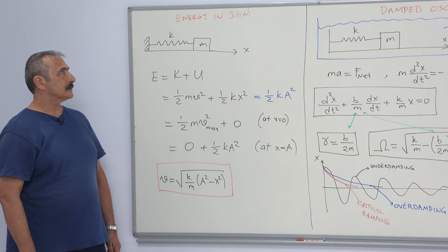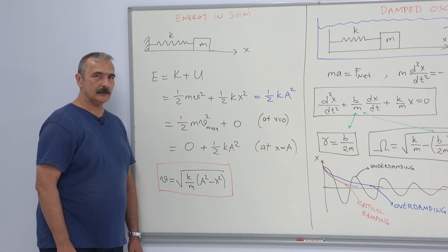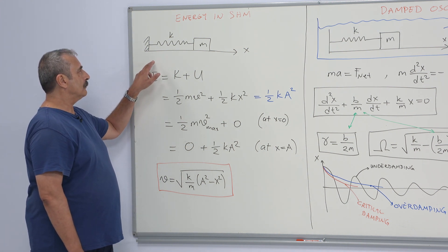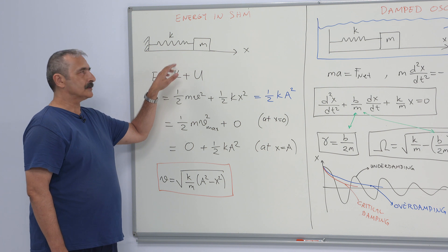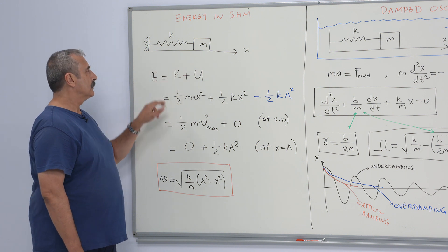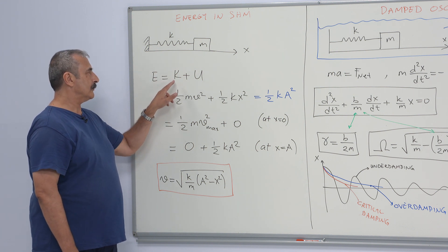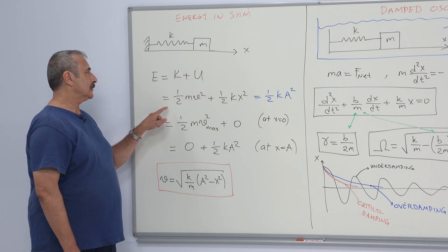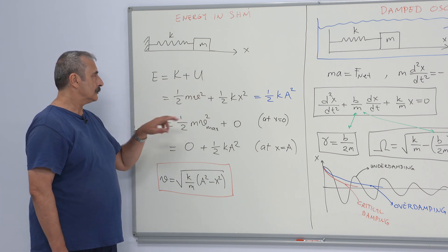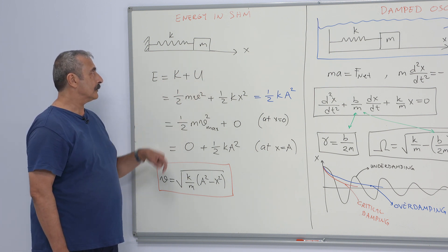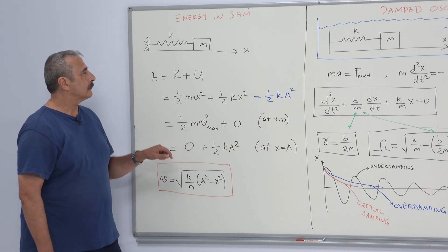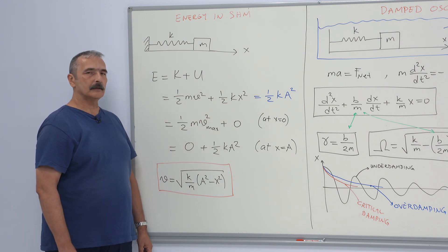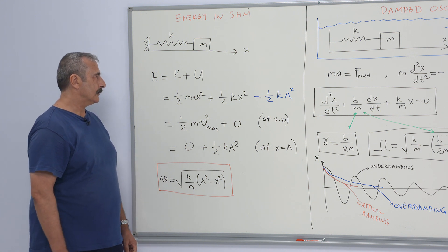Energy in simple harmonic motion is constant. Turning back to the spring-mass system, the mechanical energy is the sum of kinetic energy and potential energy. The kinetic energy is due to the motion of the mass, and the potential energy is the energy stored in the harmonic spring.